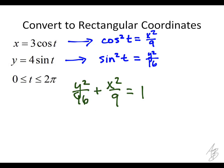So it's going to have a radius of 4 along the y axis and a radius of 3 along the x axis, and it's going to be centered at 0, 0. So what we've done, again, is we've converted these parametric equations into a rectangular equation. It's not a function, but it's a relation, and this is something that's familiar to us.